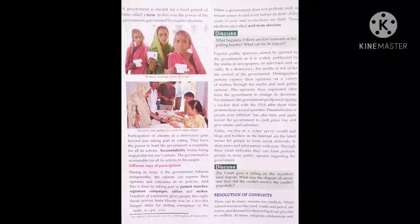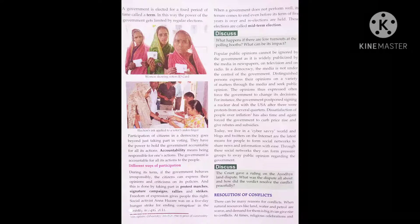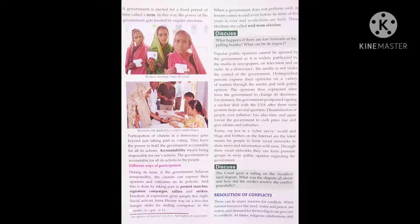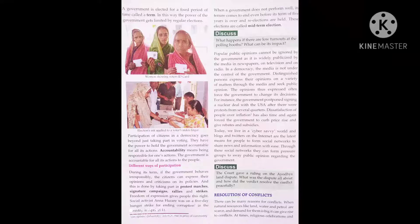A government is elected for a fixed period of time. In India, this period is five years — for five years we elect MLAs and MPs. The MLAs and MPs then go on to choose their Chief Minister and Prime Minister. In this way, power is transferred through regular elections.